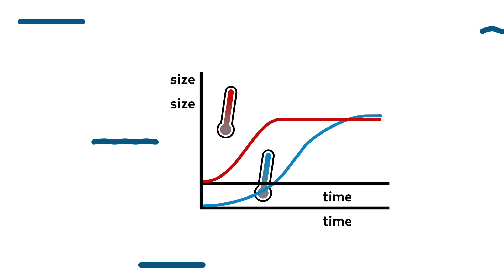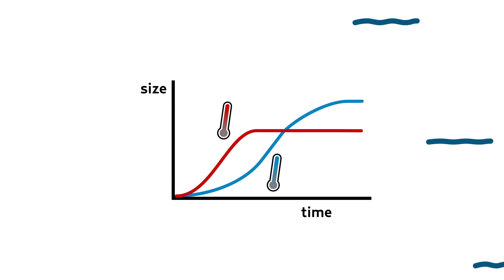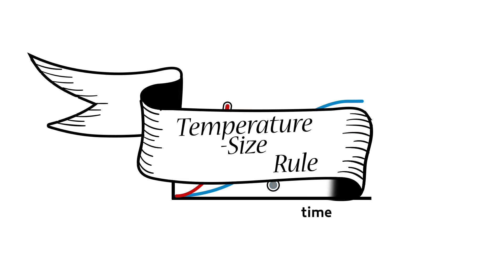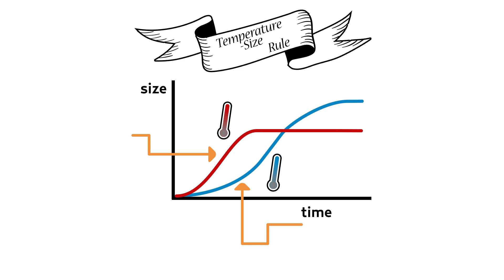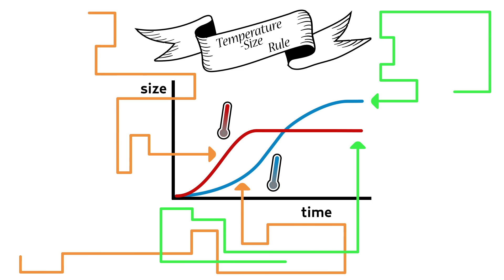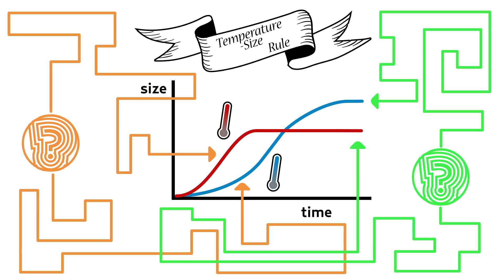This phenomenon has been observed so often that it has been termed a rule, the temperature-size rule. However, the opposing effects on growth on the one hand and adult size on the other hand have puzzled biologists for more than two decades.